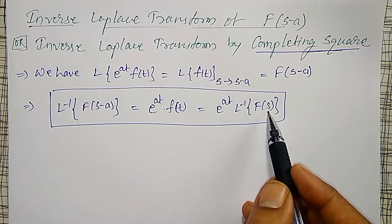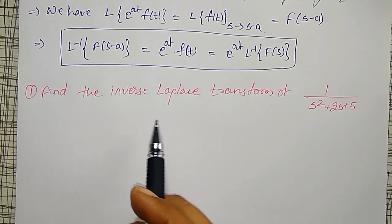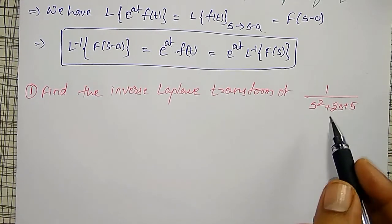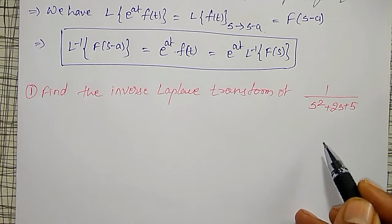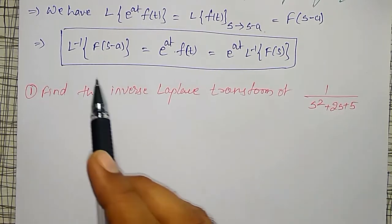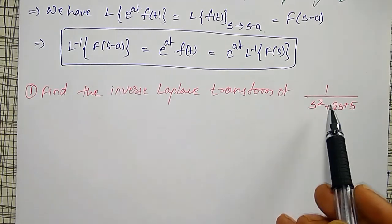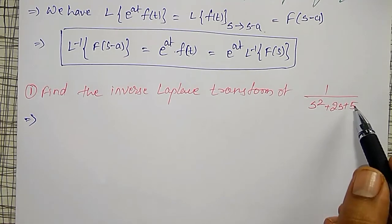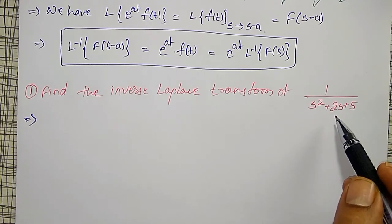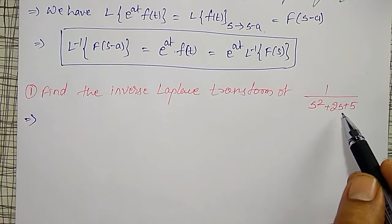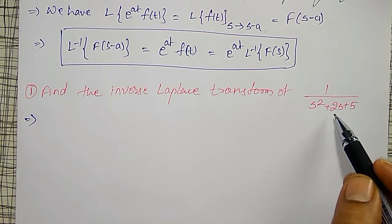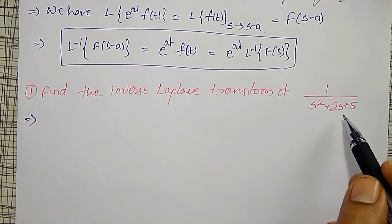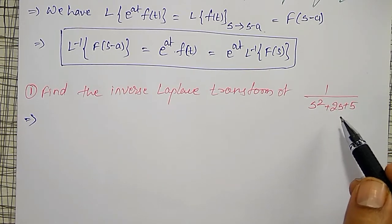Let us do examples to make this concept clear. Find the Inverse Laplace Transform of 1 divided by s squared plus 2s plus 5. Looking at this, it does not immediately look like a function of s minus A type. Our previous partial fraction method — we need to check whether denominator factors are available. The denominator is s squared plus 2s plus 5: the product should be 5 and addition or subtraction should be 2. Therefore, there do not exist simple roots.